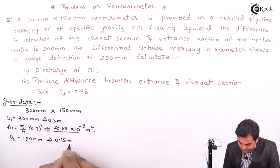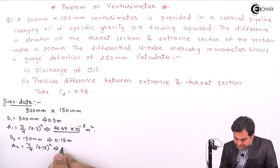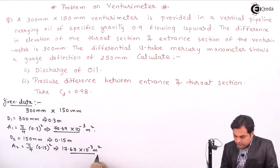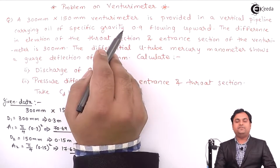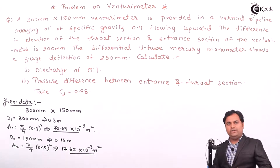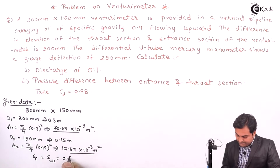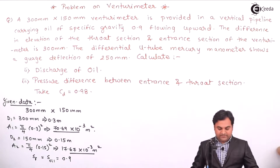The diameter D2 is 150 mm, which is 0.15 meter, so area A2 comes out to be 17.67 x 10^-3 meter square. After that, it is given that the venturimeter is provided in a vertical pipeline carrying oil of specific gravity 0.9. So the specific gravity of the flowing fluid, which is oil, is given as 0.9.